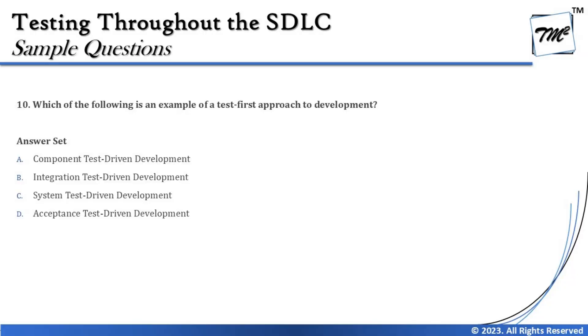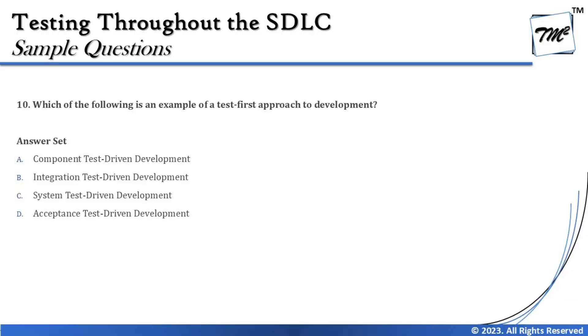Let's move on to question number 10, which asks: which of the following is an example of a test first approach to development? I initially mentioned shift left, but I misread — it is the test first approach. The test first approach is where we write the test cases first and then coding happens on the basis of that.